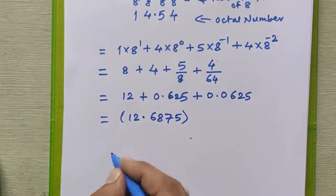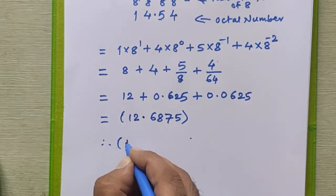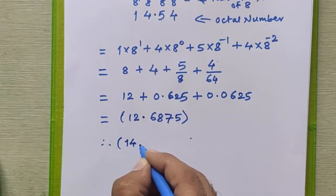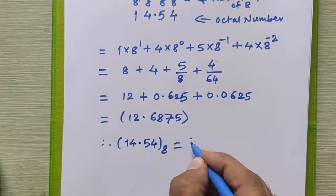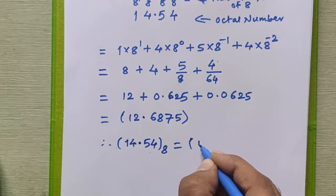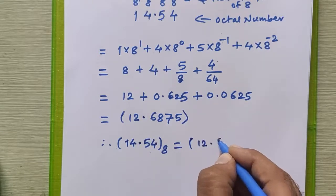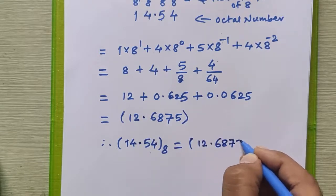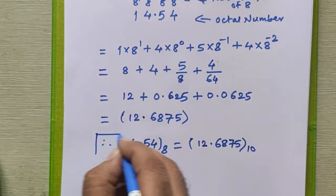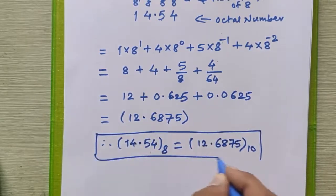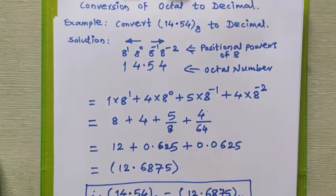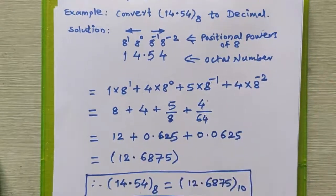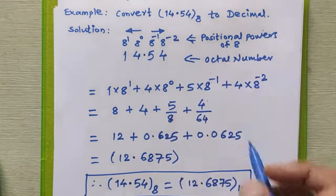Adding all the values: 8 + 4 + 0.625 + 0.0625 = 12.6875. Therefore, 14.54 in octal is equal to 12.6875 in decimal. This is the procedure we follow to convert any octal number to a decimal number.